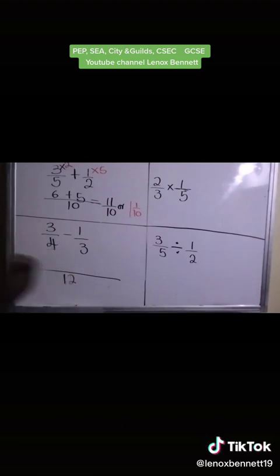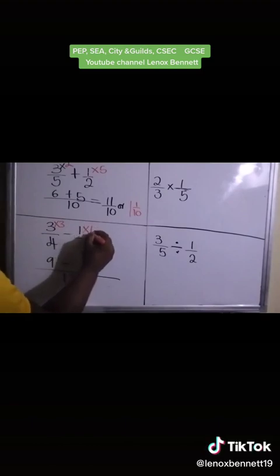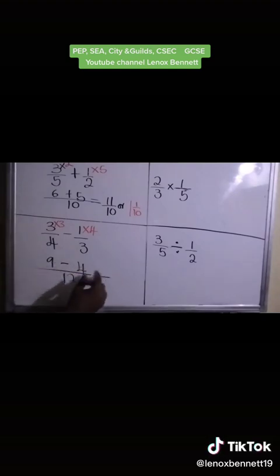So 4 into 12, that goes 3 times. So we multiply the numerator by 3. So 3 times 3 is 9. Put our subtraction sign. 3 into 12, that goes 4 times. So we multiply by 4. 1 times 4, which is 4. Go ahead now and subtract. 9 subtract 4 gives us 5 over 12. And that would be our answer.